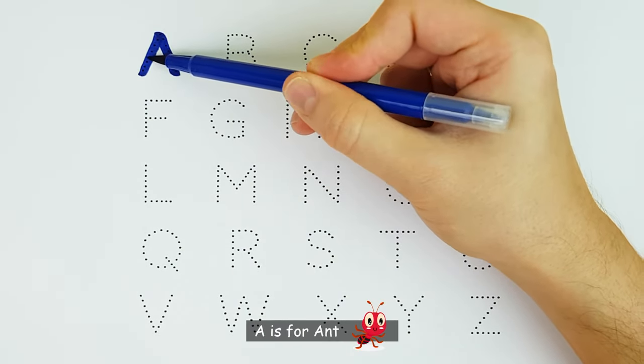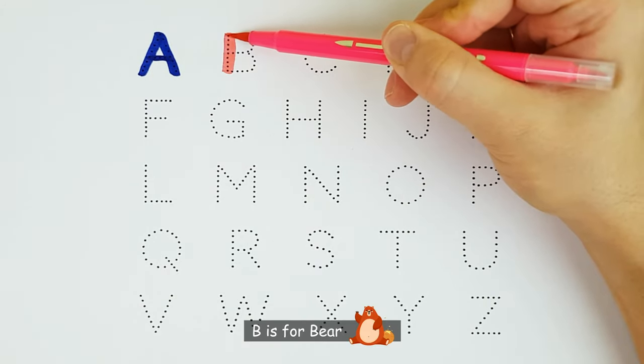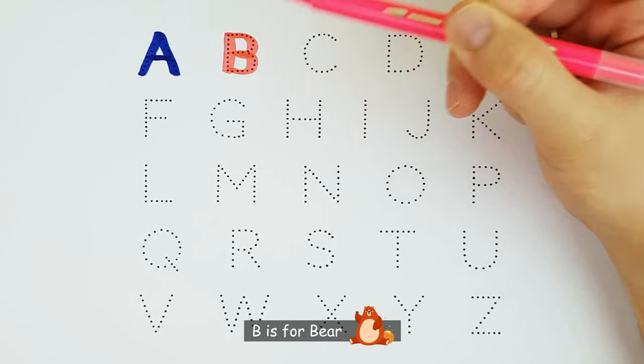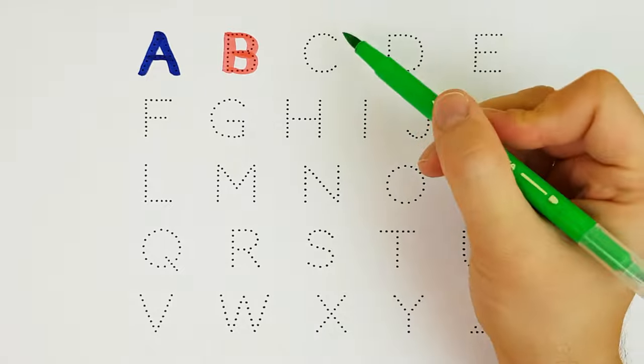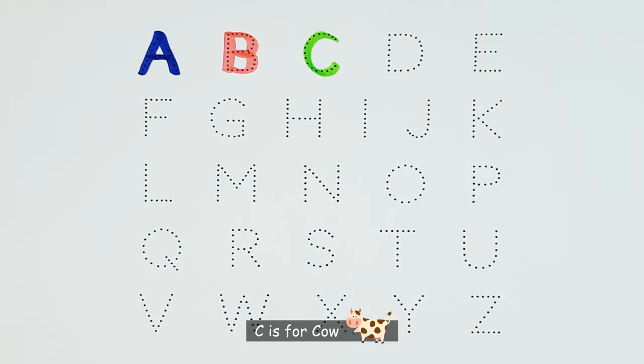A. A is for Ant. A. B. B is for Bear. B. C. C is for Cow. C.